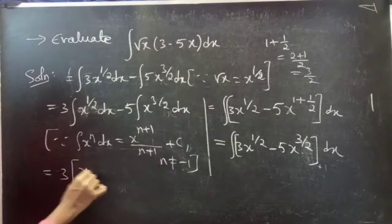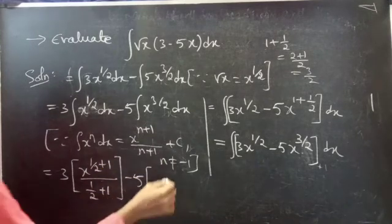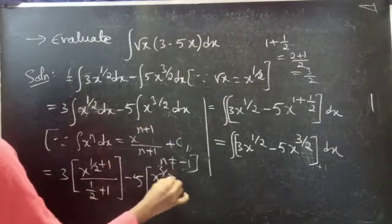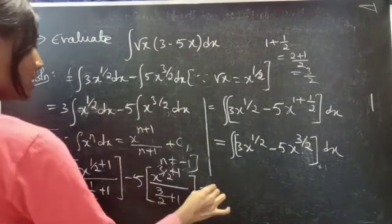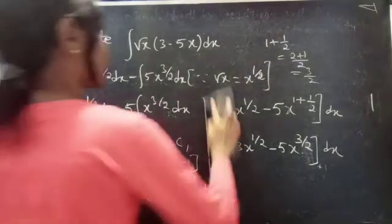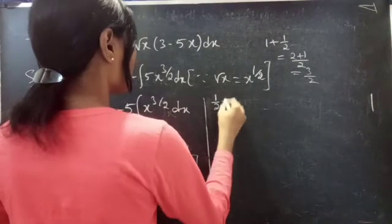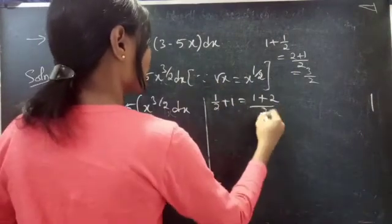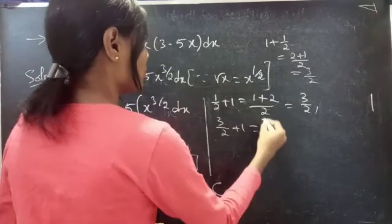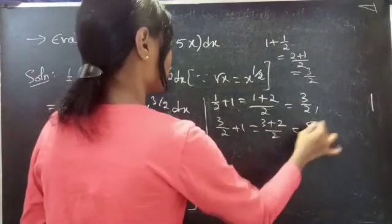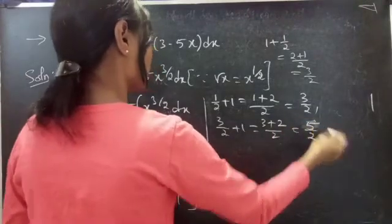We have n equals 1 by 2 and n equals 3 by 2, so we don't have any n equal to minus 1. Applying the formula: 1 by 2 plus 1 equals 3 by 2, and 3 by 2 plus 1 equals 5 by 2.